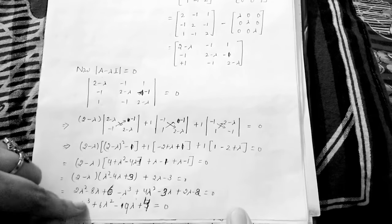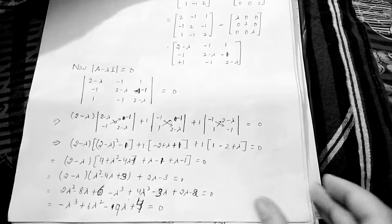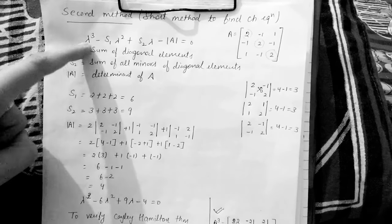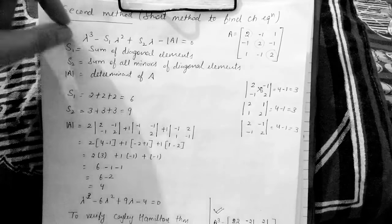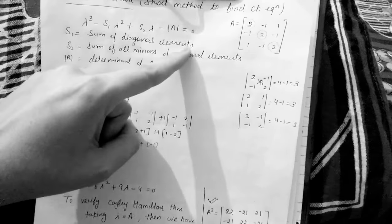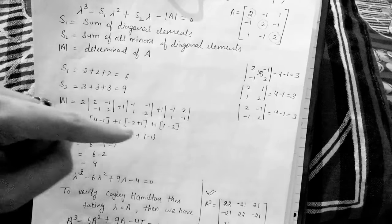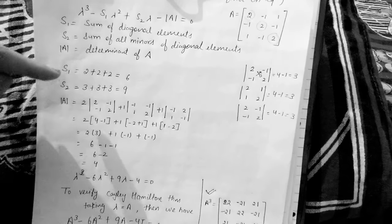So we use the second method to find this equation in much less time with smaller calculations. For the second method, you just need to know this generalized equation: λ³ - S₁λ² + S₂λ - |A| = 0. You just find the value of three symbols — S₁, S₂, and |A| — and put those values in. S₁ is the sum of the diagonal elements, and S₂ is the sum of the minors of all diagonal elements.